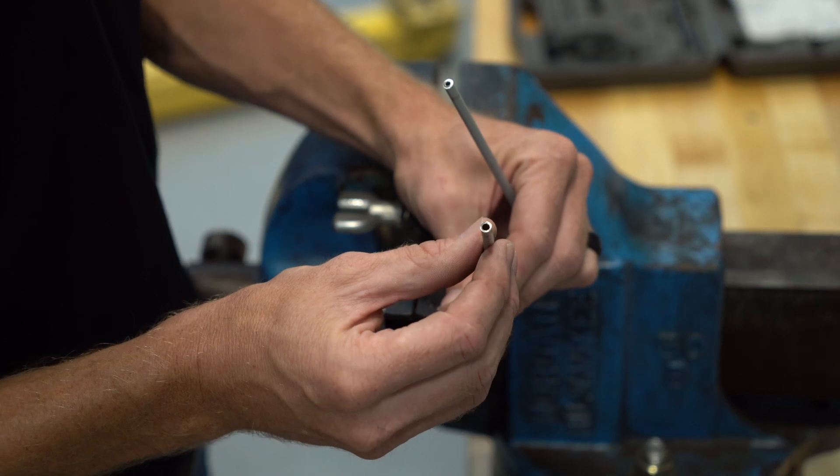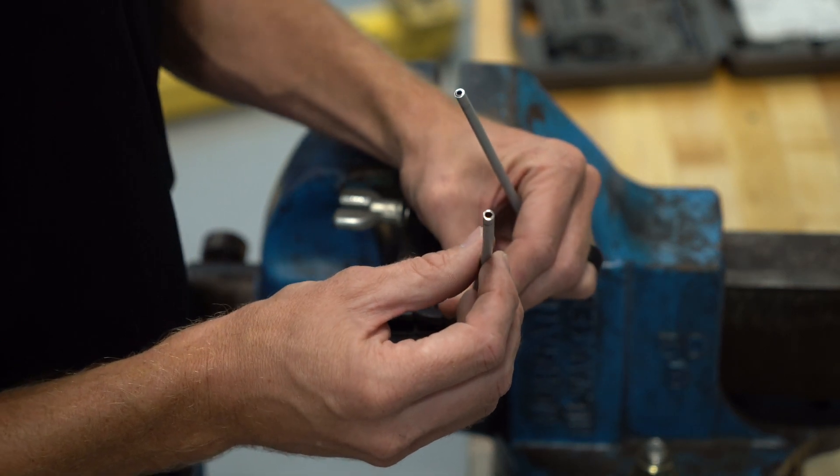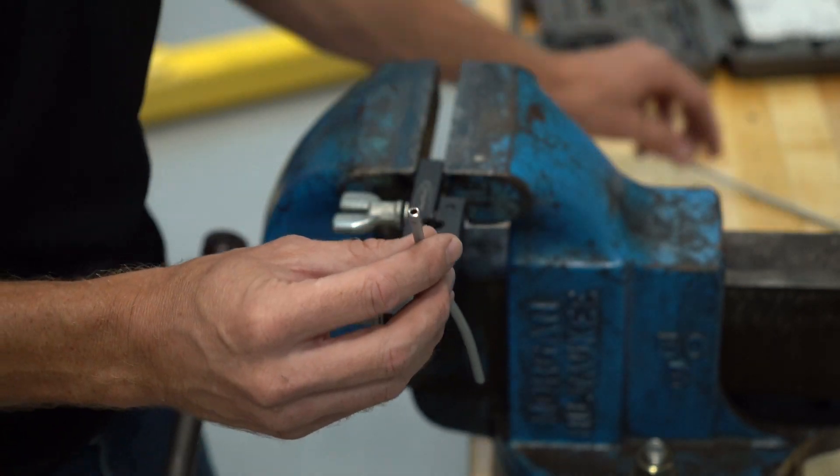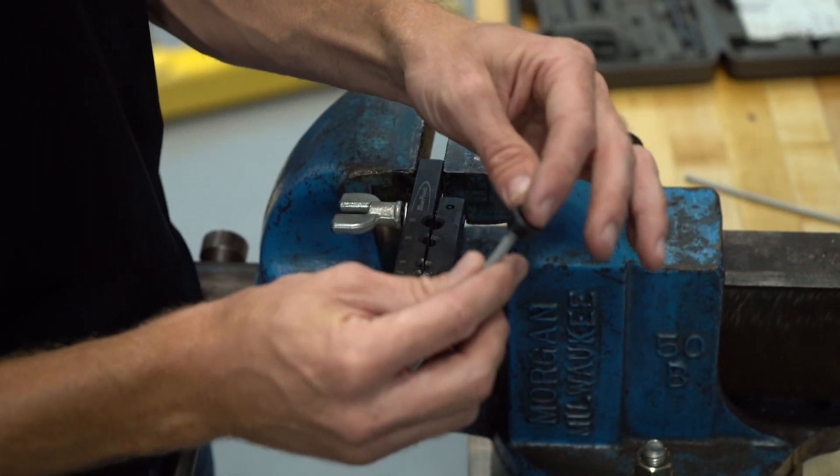This one I took my time and made this look really good. So this is nice and square, and we have no problem getting the forming die down in the end of the line.